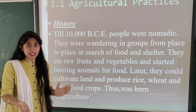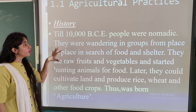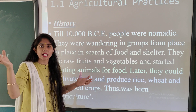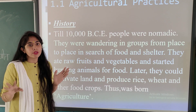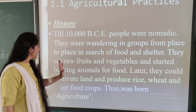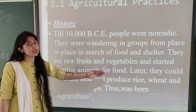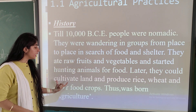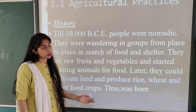In our earlier days, that is around 10,000 BCE, nomadic people were there. They used to roam here and there, eating preserved plants, leaves, crops, fruits, and twigs. In this way, they wandered in groups from one place to another in search of food and shelter. They ate raw fruits and vegetables, and started hunting animals for food.